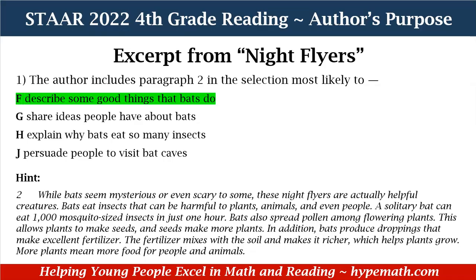Let's look at our selection again, because paragraph two talks about how bats are helpful, how they eat insects that are harmful to plants, animals, and people, how they pollinate flowers, and also how their droppings help. Droppings help to fertilize the soil and make it richer for plants to grow. So that is why F is the correct answer.